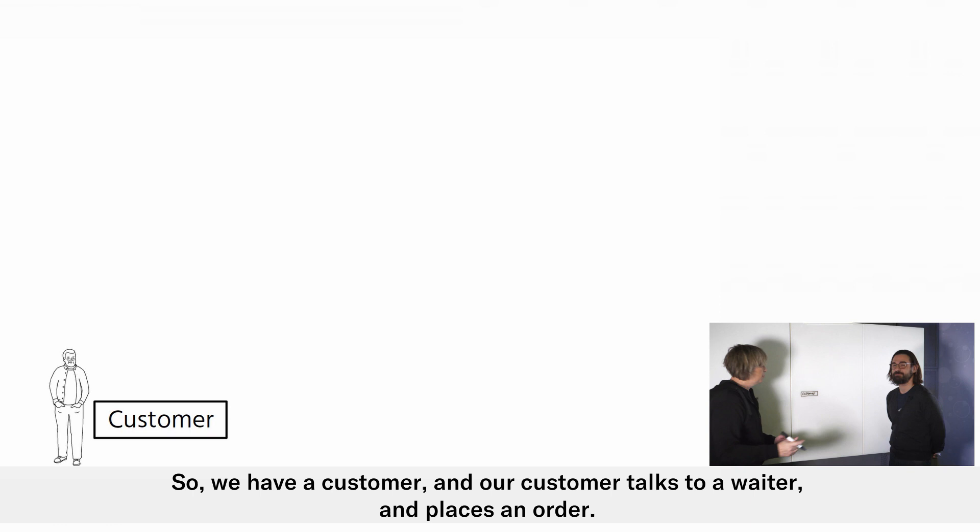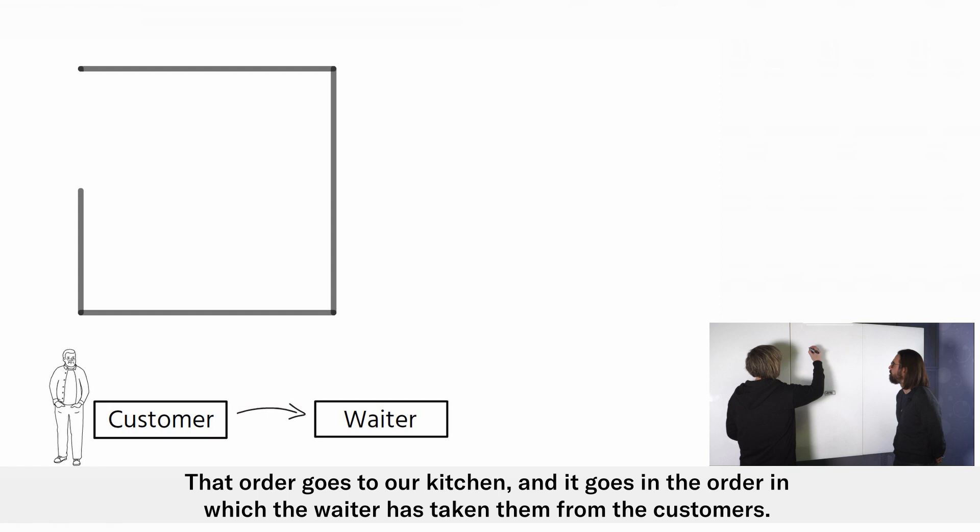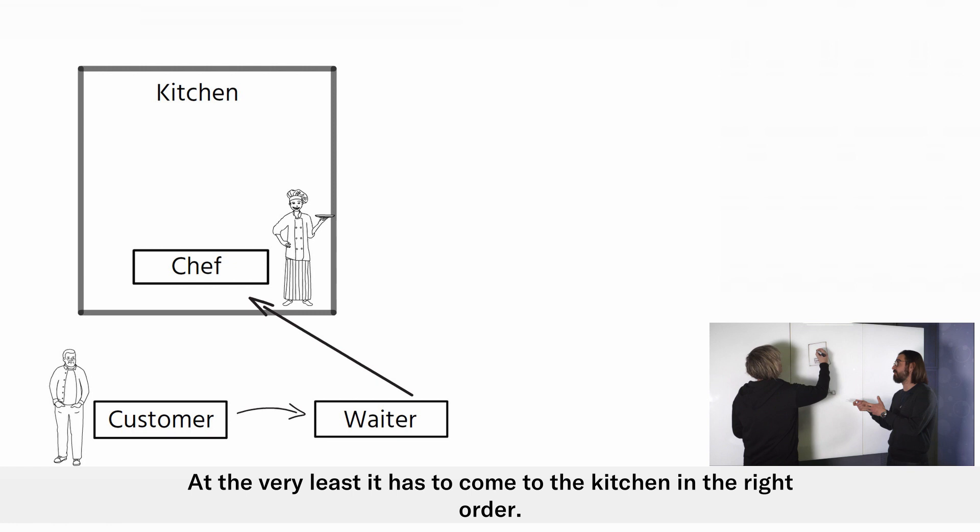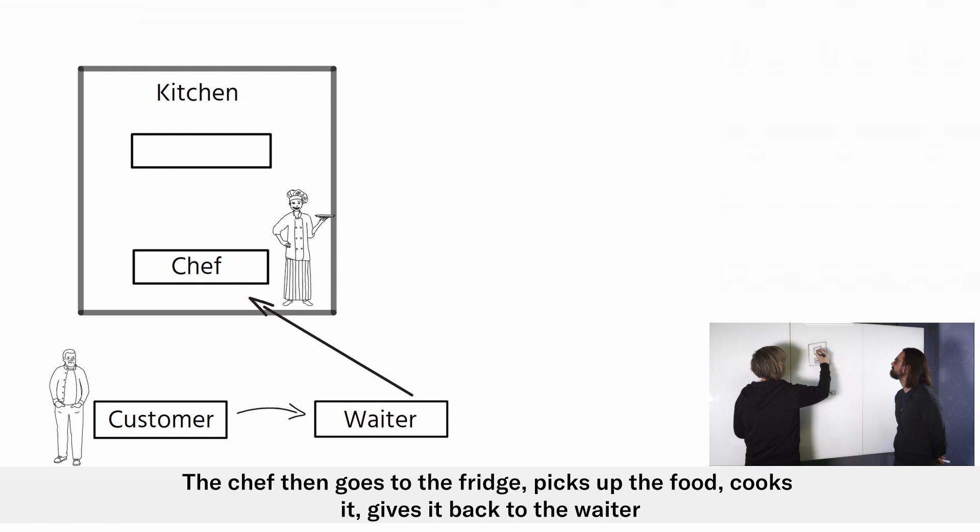So we have a customer and our customer talks to a waiter and places an order. That order goes to our kitchen and it goes in the order that waiter has taken from the customer. Super important that you get your food in the right order that you've ordered it. It's very frustrating to see other people getting their food. At least it has to come to the kitchen in the right order.